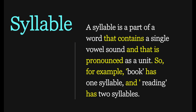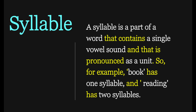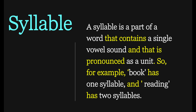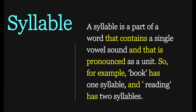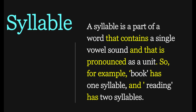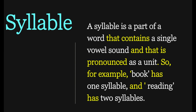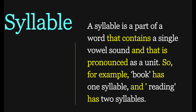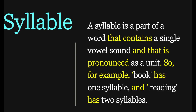Now we move on to 'syllable.' A syllable is a part of a word that contains a single vowel sound and is pronounced as a unit. For example, 'book' has one syllable and 'reading' has two syllables. It must contain a single vowel sound and be pronounced as a single unit. Syllable has a long discussion, but here we just want to give you an understanding of these terms so you can understand the interpretation of text at the level of phonology.